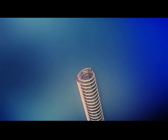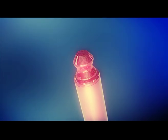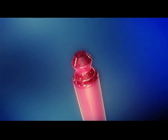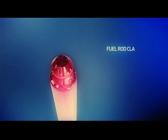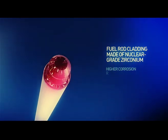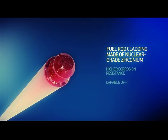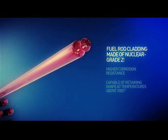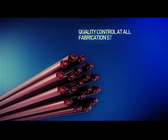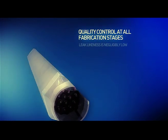Leak-tightness of the fuel rod zirconium cladding is the second safety barrier. The fuel rod cladding is made of nuclear-grade zirconium and possesses higher corrosion resistance. It is capable of retaining its shape under temperatures of more than 1,000 degrees Celsius. Quality control over nuclear fabrication is exercised at all process stages. Multiple quality checks make probability of fuel leaks negligibly low.